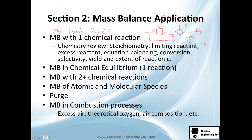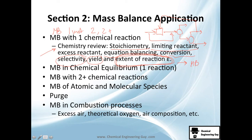Mass balance with chemical reaction is one of the most complex parts of the course. Many students struggle because they lack a good chemistry foundation — they don't know stoichiometry, can't balance equations, and don't understand limiting reactant, conversion, selectivity, or yield. If you don't understand stoichiometry, it's almost impossible to get selectivity and yield. The most important concept here is extent of reaction, which is what's going to help us do mass balances with chemical reactions.